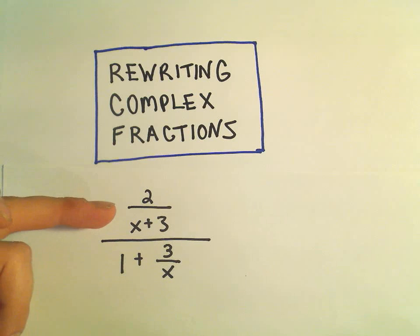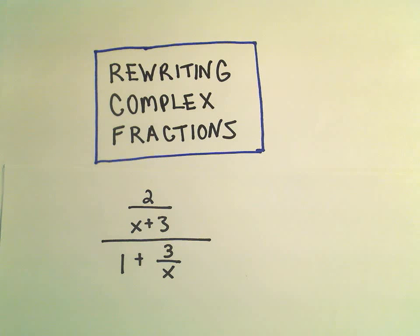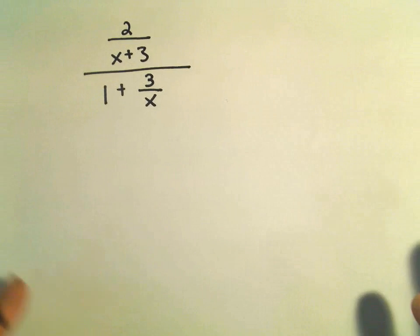Another thing is to simply write the numerator as a single fraction, and the denominator as a single fraction, and then what we're going to do is just use the trick that we can flip and multiply. And that's how I've always done them, so that's how I'm going to do this example.